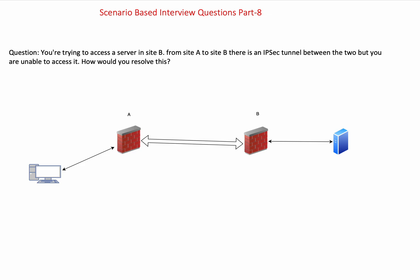So in this video, our question is: you're trying to access a server on site B, and from site A to site B you have an IPsec tunnel. So you have a tunnel from site A to site B — this is site A, this is site B — but you're unable to access it. What would you do in this case? Considering you are at X trying to access something from Y, but you're unable to access.